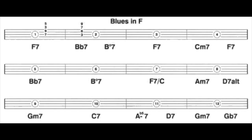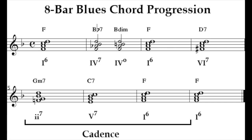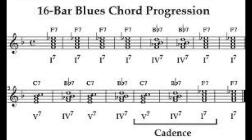Blues music is based on a standard structure, a 12-bar chord sequence made up of three phrases each four bars long, which repeat in the same order throughout the song. However, the classic blues form has undergone extensive reworking and variations over the years, and today 8-bar and 16-bar blues are also common.